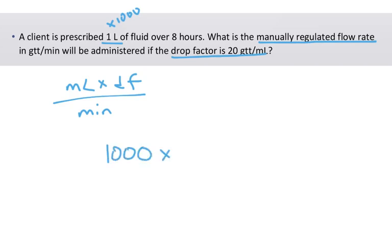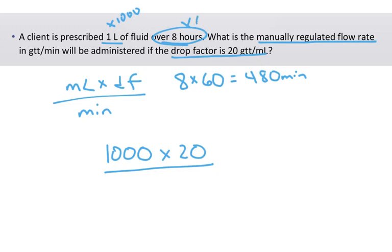My drop factor, I've already underlined it, was 20. Over all the minutes. Well, I have eight hours. So I know that one hour is 60 minutes. So I'm just going to multiply eight times 60, and I get 480 minutes. Because eight hours is 480 minutes. I'm just going to multiply, and usually on my paper, I just do times 60, right here is what I do. And you still get 480.